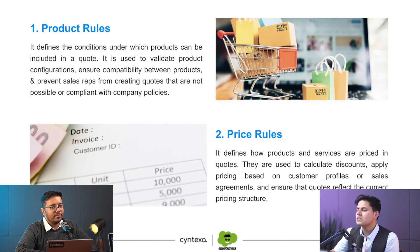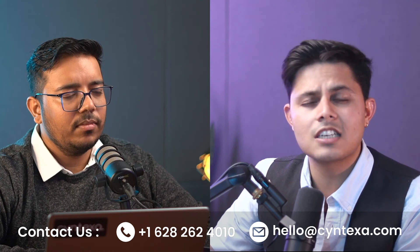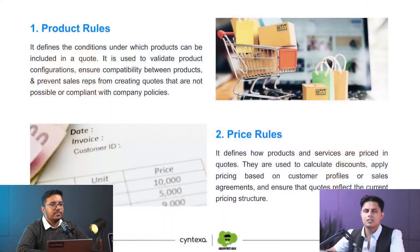Then comes price rules. Price rules typically help you calculate discounts and apply pricing based on customer profiles or the sales agreements you've had with that customer. Without it, your pricing cannot actually go right. You do not want your sales executives to look into what contract you had with a client or what kind of customer this is and what pricing should be given. There's a lot of chance of error, but when the system helps do all of that, it just makes life easier.